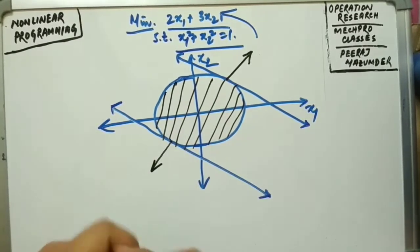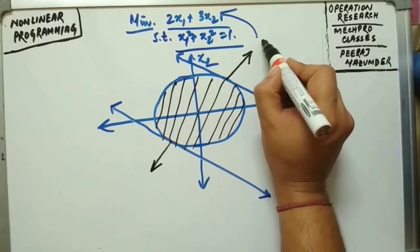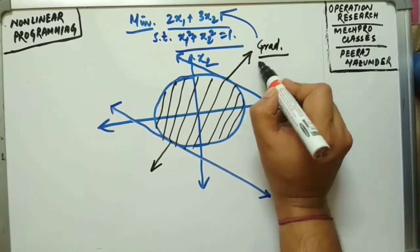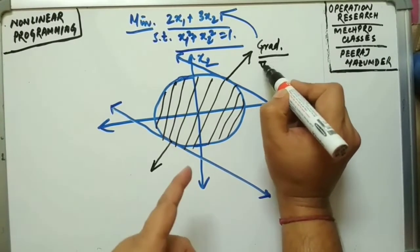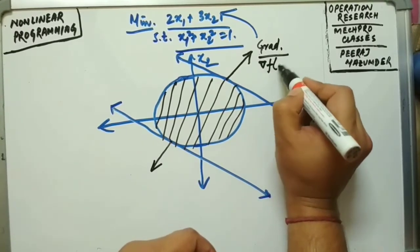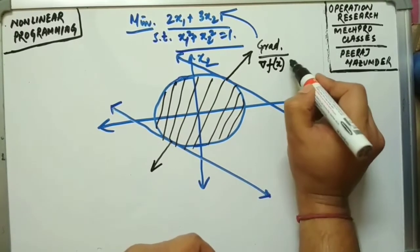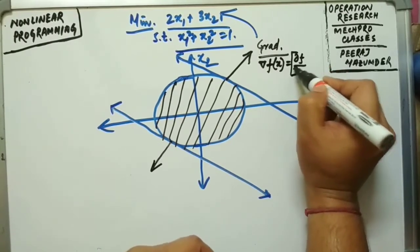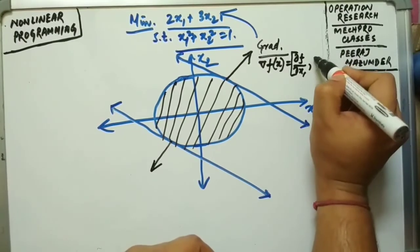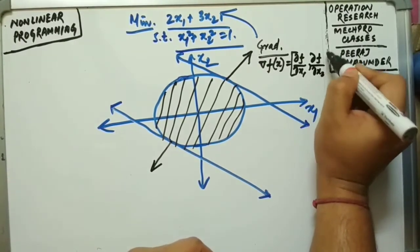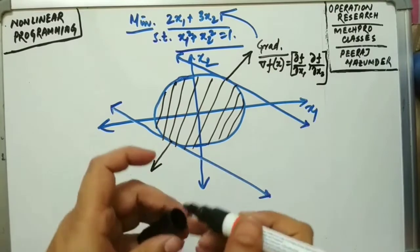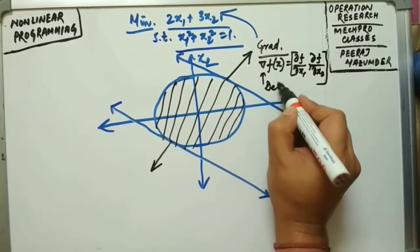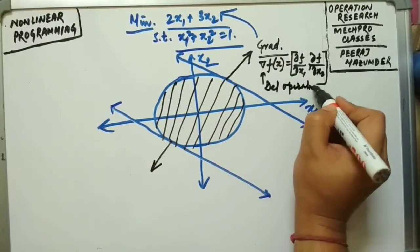For the maximization, the del operator gives the gradient. The gradient of f(x) can be written using the del operator as [∂f/∂x₁, ∂f/∂x₂]. This is the del operator for this particular nonlinear problem.